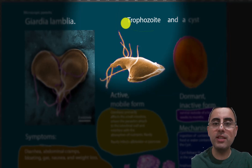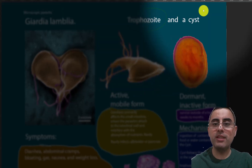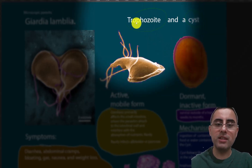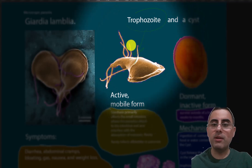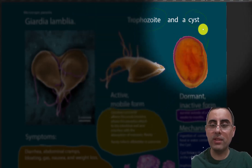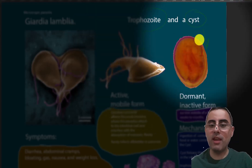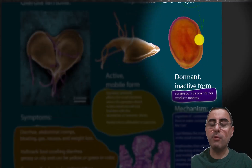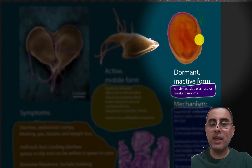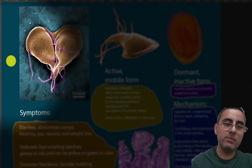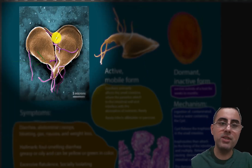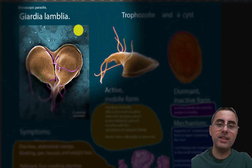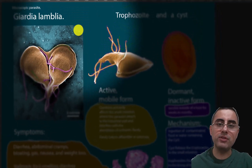The two forms are the trophozoite and the cyst form. The trophozoite is the active and mobile parasite, while the cyst is dormant and stays inactive in the environment until it infects a person. On the picture you can see cell division of the active trophozoite form.